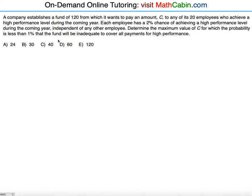A company establishes a fund of 120 from which it wants to pay an amount C to any of its 20 employees who achieve a high performance level during the coming year. Each employee has a 2% chance of achieving a high performance level, independent of any other employee. Determine the maximum value of C for which the probability is less than 1% that the fund will be inadequate to cover all payments for high performance.